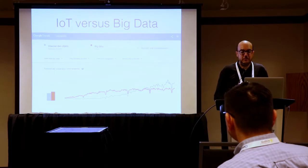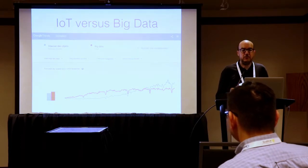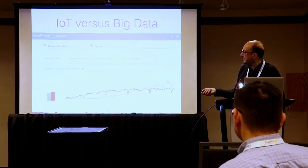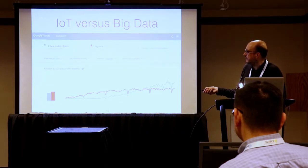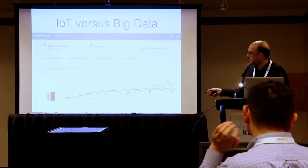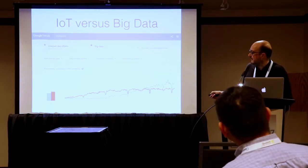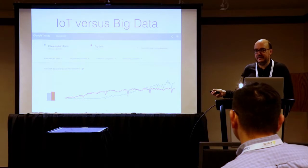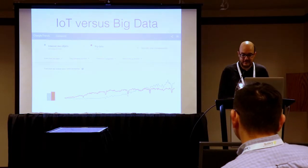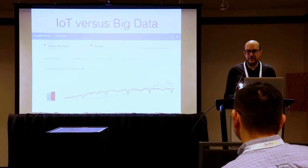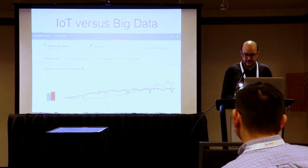Looking at Google Trends, comparing Big Data with Internet of Things, we see that Big Data was a really popular term, but from 2016 the Internet of Things has become much more popular than Big Data. This trend tells us that the Internet of Things is going to be increasingly important in the coming years.